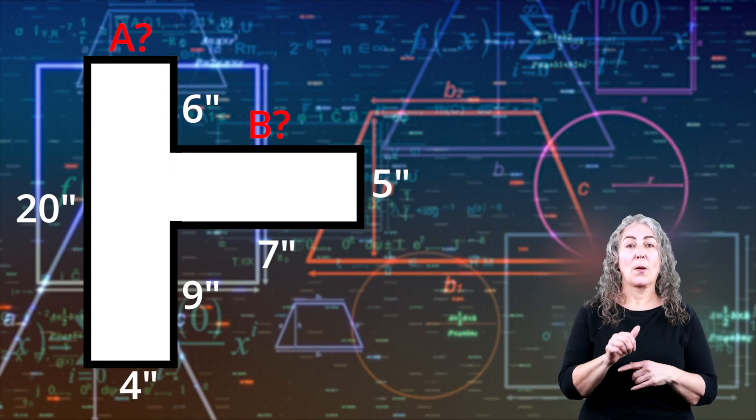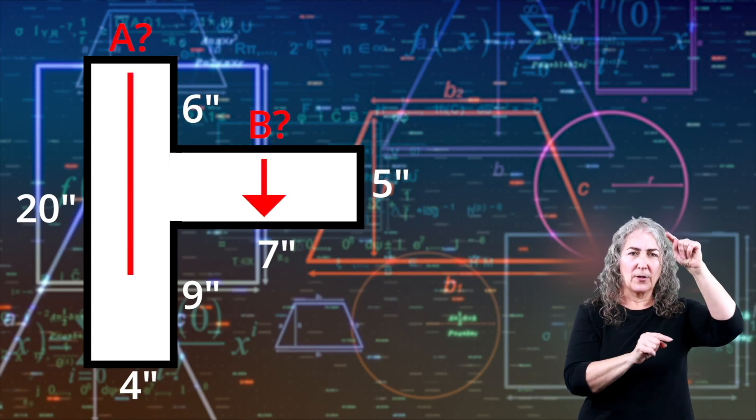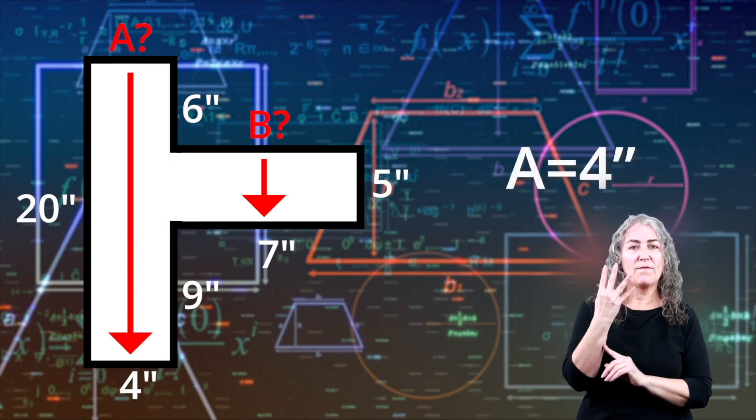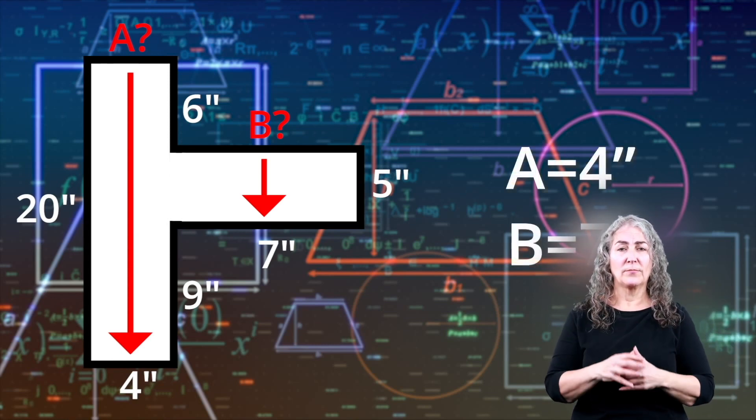Next, to find the width of lines A and B, take a look at the width of the lines directly across the figure. For help, follow the arrows. Line A is equal to 4 inches and line B is equal to 7 inches.